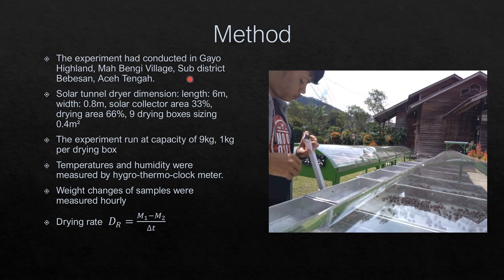We evaluated a solar tunnel dryer type Hohenheim Aceh that has 6 meter length and 0.8 meter width. The dryer has 33% solar collector area and 66% drying area. It also has 9 drying boxes, each with an area of 0.4 meter square.